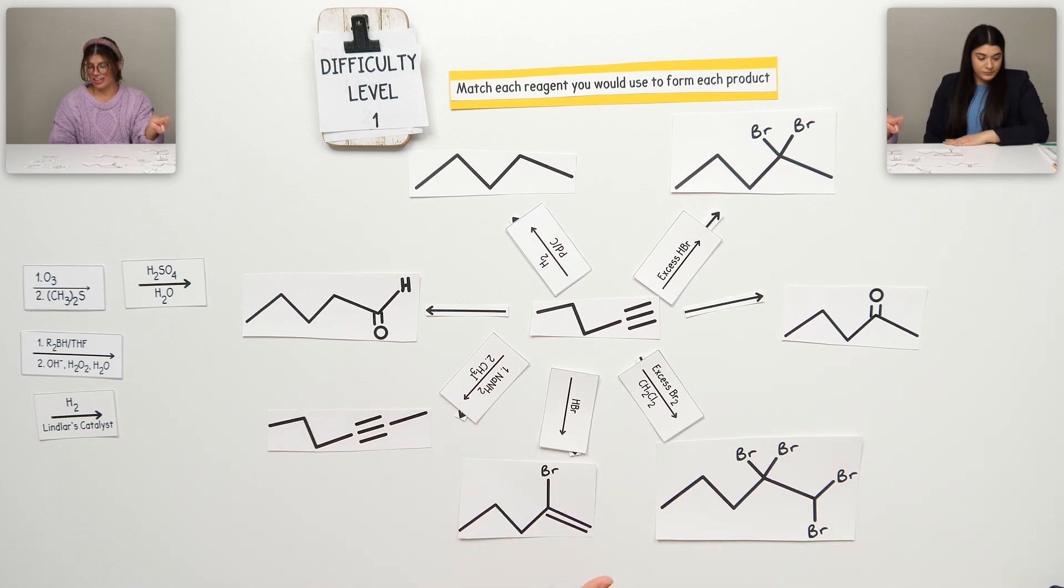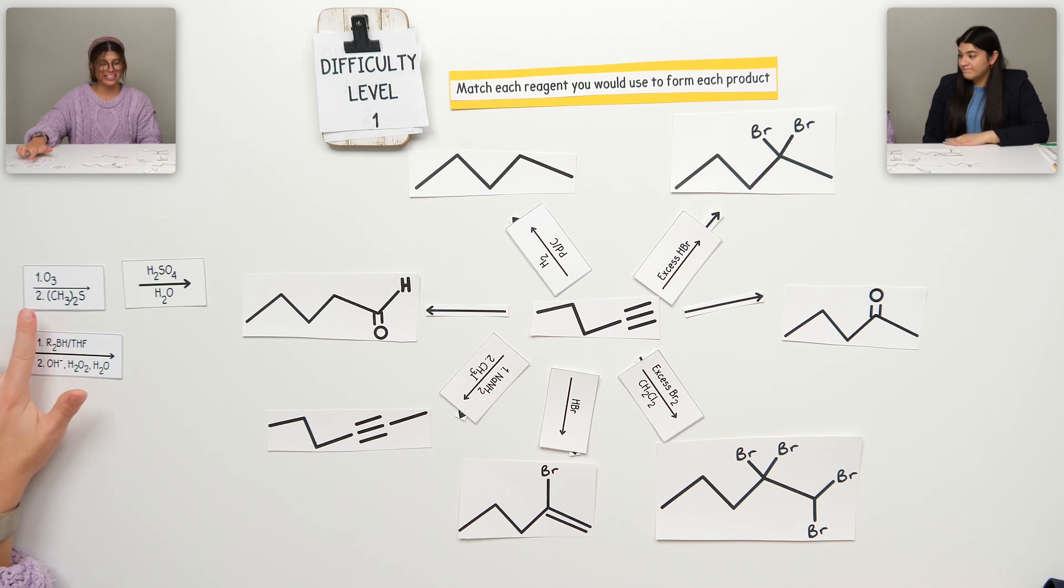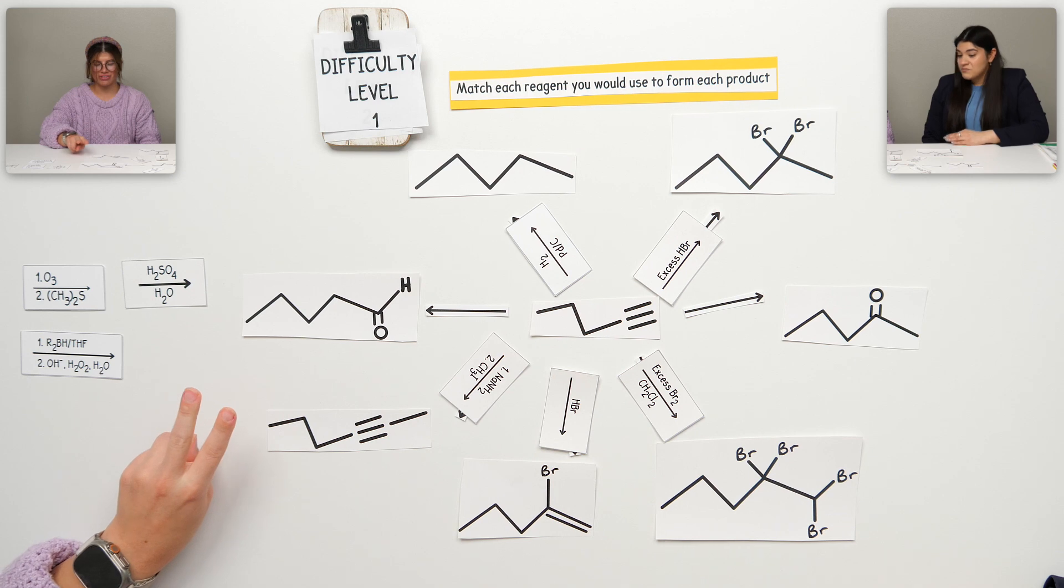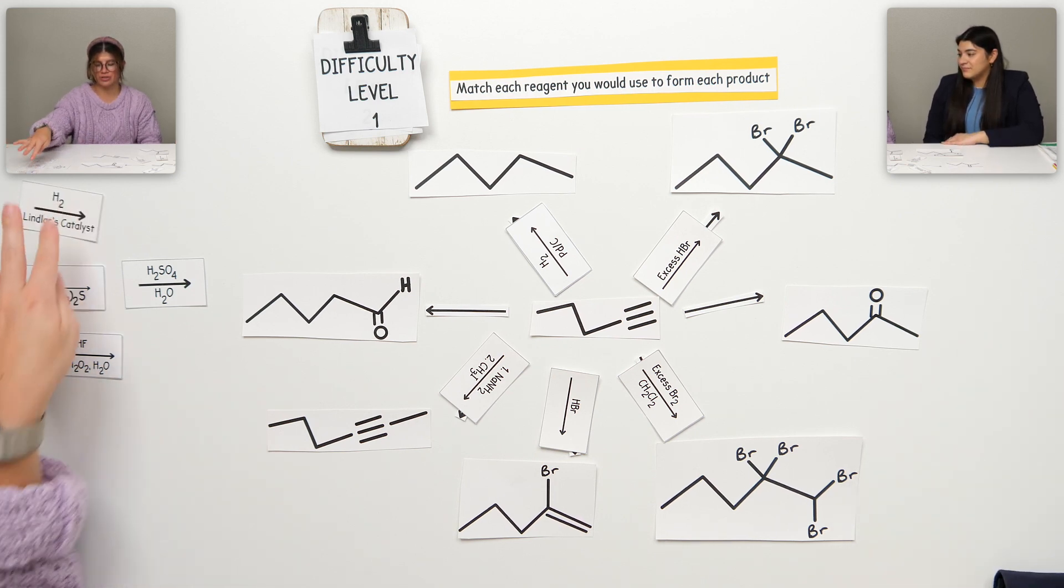I know we're left with these two. This is an aldehyde, not a ketone. And so we have excess here. So I know it's not this one. What is that for? That one would give me a cis alkene. Yes. That would be my product. Lindler's catalyst, it gives you a cis alkene. Then this is ozonolysis, which could give me either one of these, but it would give me two products. We don't have that here. So these two are out.